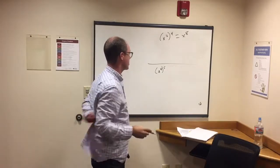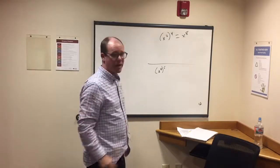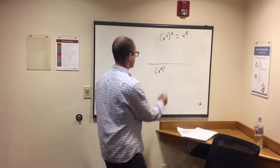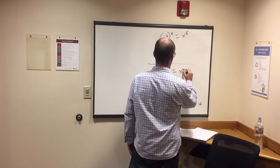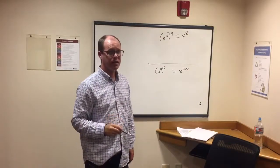One more chance here. We have x to the fourth to the fifth power. So again, we're going to multiply the four and the five, so we get x to the 20th, but not x to the ninth.